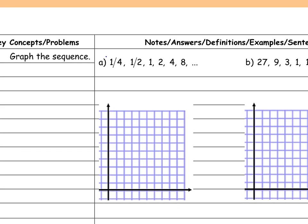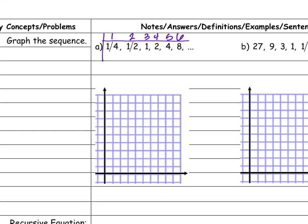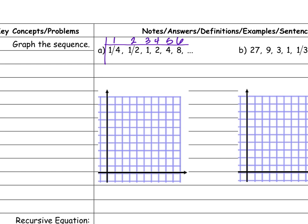I'm going to make my table: term 1 through 8. My graph goes up to 8, so I can actually graph all these points. At x = 1, y = 1/4; at x = 2, y = 1/2; at x = 3, y = 1; at x = 4, y = 2; at x = 5, y = 4; at x = 6, y = 8.